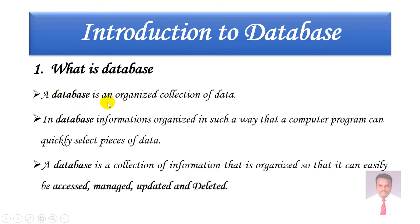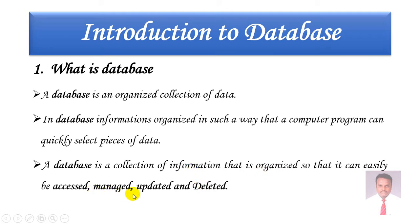A database is an organized collection of data. The information is organized so that computer programs can quickly select the piece of data. We can write computer programs in order to fetch or retrieve the data as we like. A database is a collection of information that can be easily accessed, managed, updated, and deleted. So whenever anybody asks you what is a database, you can say a database is an organized collection of data.